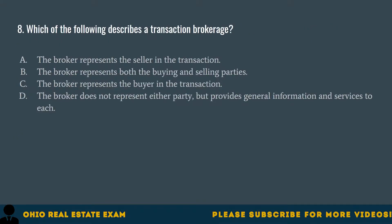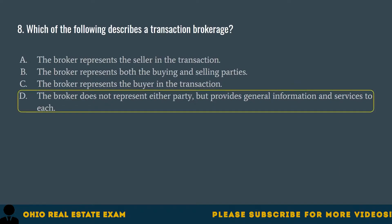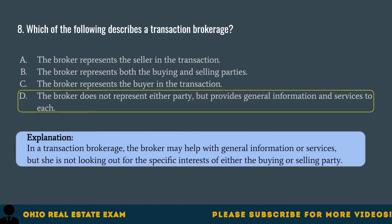Question 8. Which of the following describes a transaction brokerage? A. The broker represents the seller in the transaction. B. The broker represents both the buying and selling parties. C. The broker represents the buyer in the transaction. D. The broker does not represent either party, but provides general information and services to each. The correct answer is D. In a transaction brokerage, the broker may help with general information or services, but is not looking out for the specific interest of either the buying or selling party.